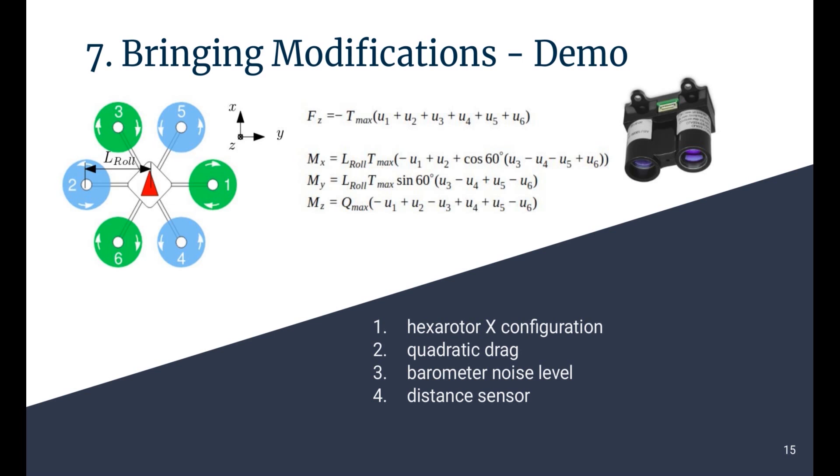Okay, for this demo we will bring four modifications to the code. One, we now want to simulate a hexacopter in X configuration, so we'll have to read not four but six motor signals, and we will need to modify how the forces and moments are generated. Let's assume that the arm length is L-roll and the angle between two arms is 60 degrees. It gives us the equations for the vertical force and moments as shown. The vertical force is negative because the z-axis is defined as pointing down. Two, for our aerodynamics friends, we will modify the linear drag model into a quadratic drag, and this in one line of code. Three, we will also simulate a very noisy barometer, which will motivate point four to add a distance sensor facing down.